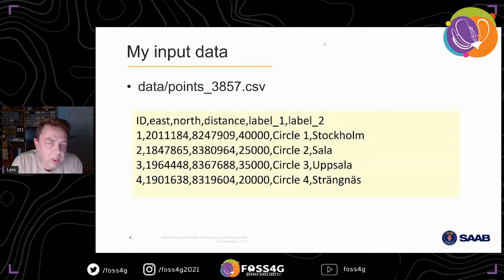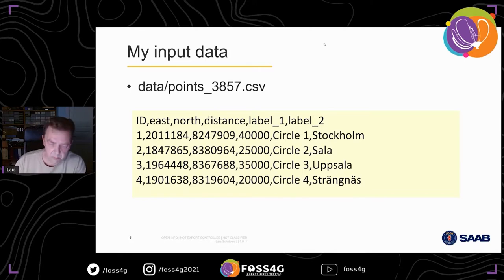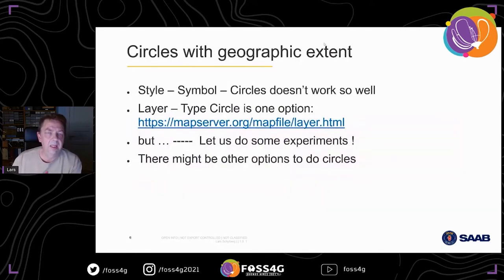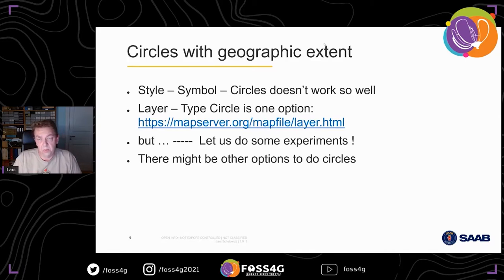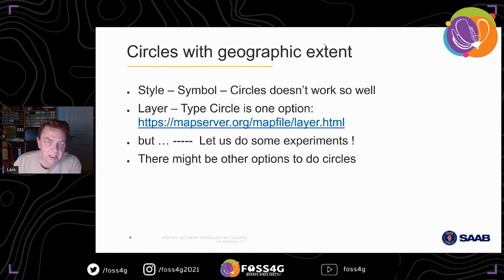What I want to do is: I have a simple comma-separated file with IDs, easting, northing, distance — actually the radius of the circle — and two possible labels. If you look in the documentation and look at circles, you mostly end up in the style symbol circles, and that doesn't work very well when you are going to do circles with geographic extent. But if you read carefully, you end up with layer type circle.